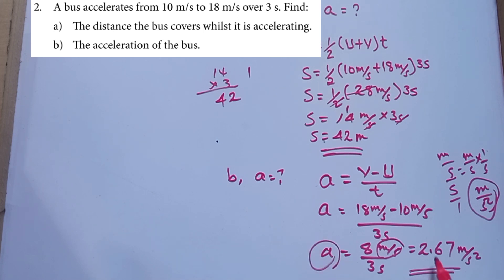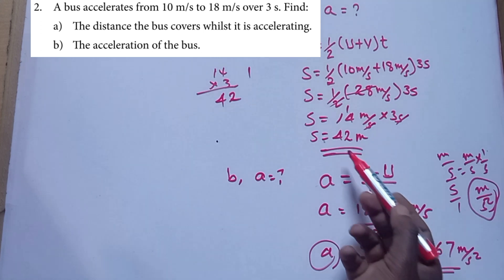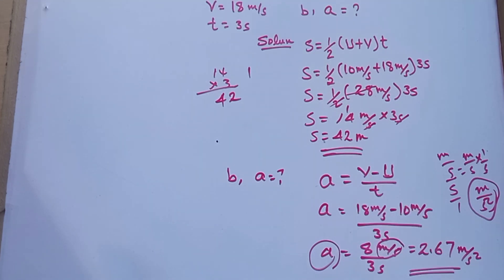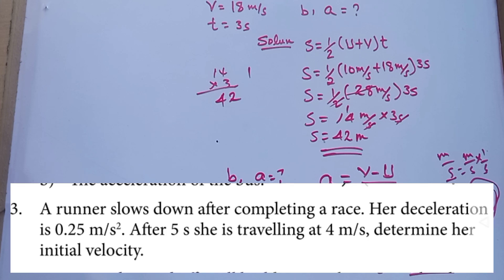Acceleration is equal to (18 minus 10) divided by 3, which gives 8 over 3, approximately 2.67 meters per second squared. That completes question 2.